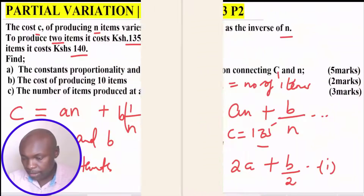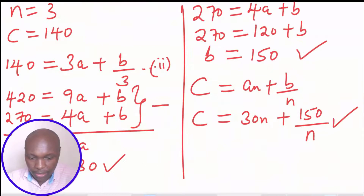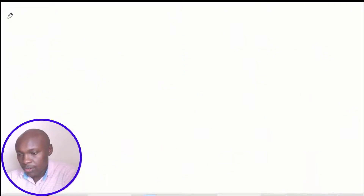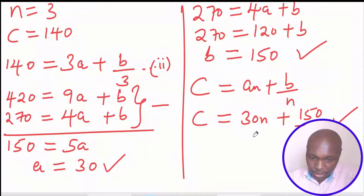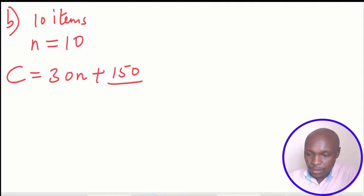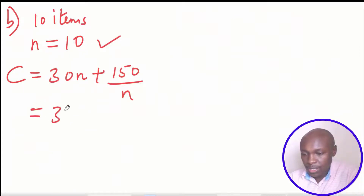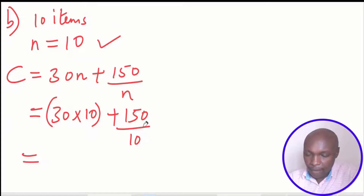That completes part A. Now for part B: find the cost of producing 10 items. Ten items means N equals 10. We take the equation C equals 30N plus 150 over N and substitute N equals 10: C equals 30 times 10 plus 150 divided by 10, which gives 300 plus 15, so the cost is 315 shillings.